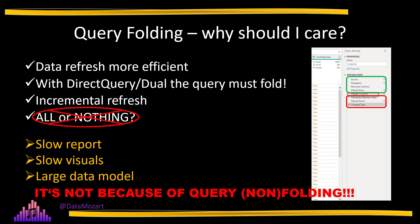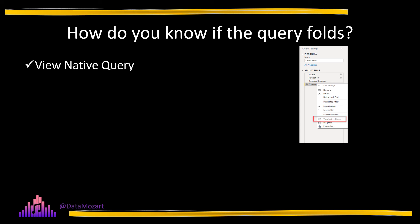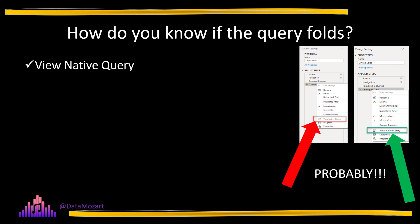Now we're not rookies anymore — we know what query folding is, why we should strive to achieve it, and some subtle tricks that can make a huge difference. It's time to learn how to check if a specific query folds or not. The first and most obvious way is to right-click on a step and check how the 'View Native Query' option looks. If it's grayed out, the step probably doesn't fold; if you're able to click on it, the query probably will fold. The word 'probably' is intentional — you can't be 100% sure, as I'll show in a future video how this option can trick you into thinking folding was broken when it actually occurred.